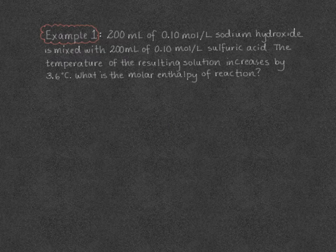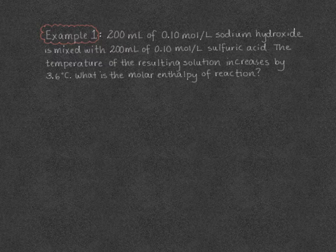Our first example: 200 milliliters of 0.1 molar sodium hydroxide is mixed with 200 milliliters of 0.1 molar sulfuric acid. The temperature of the resulting solution increases by 3.6 degrees Celsius. What is the molar enthalpy of reaction?